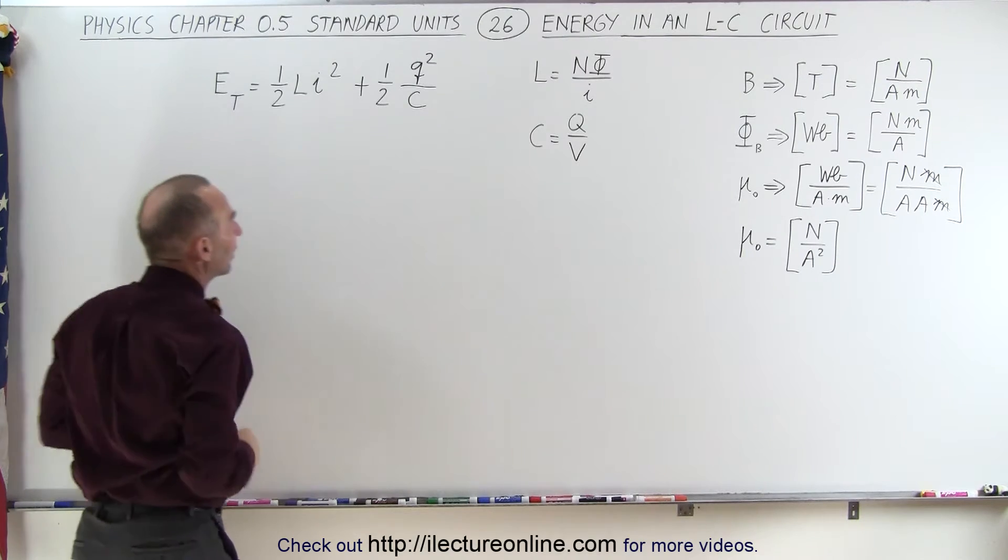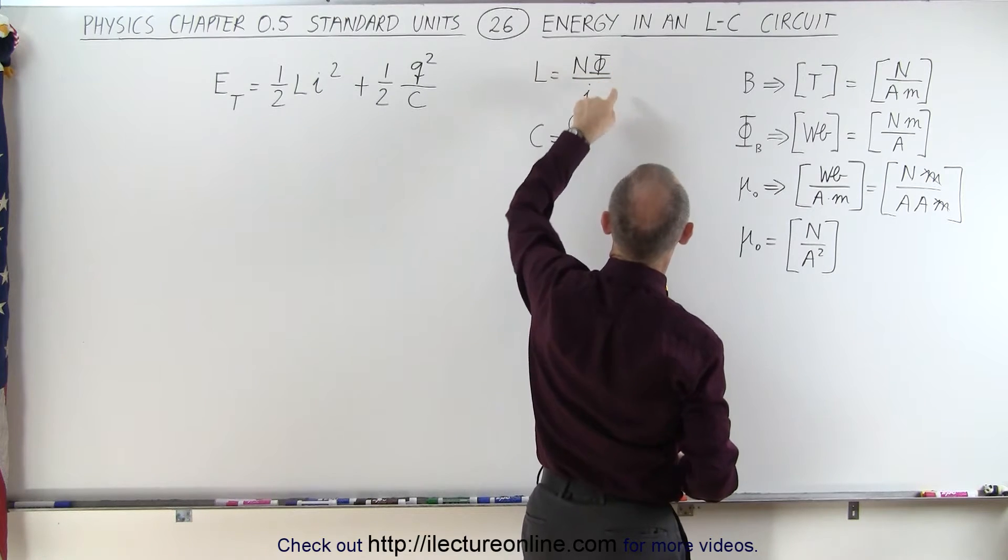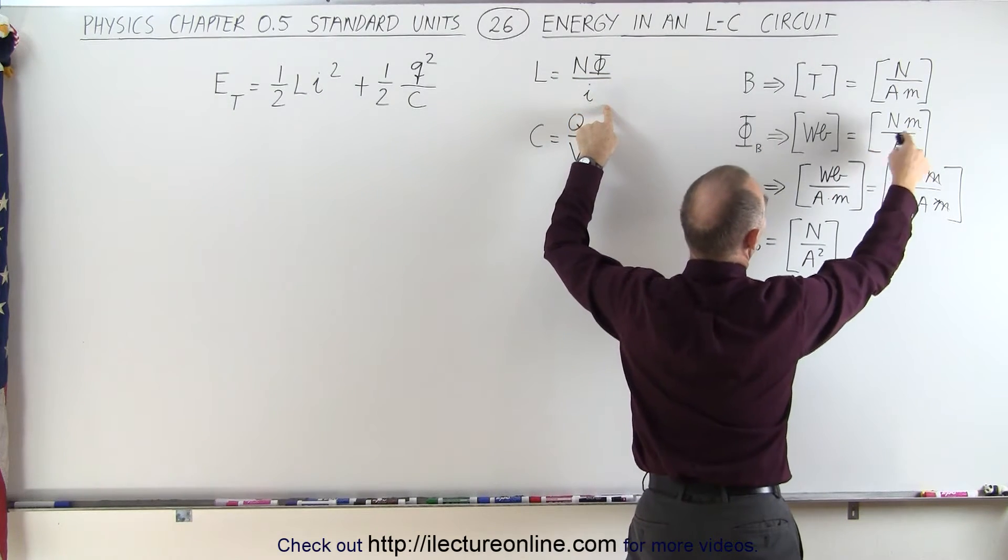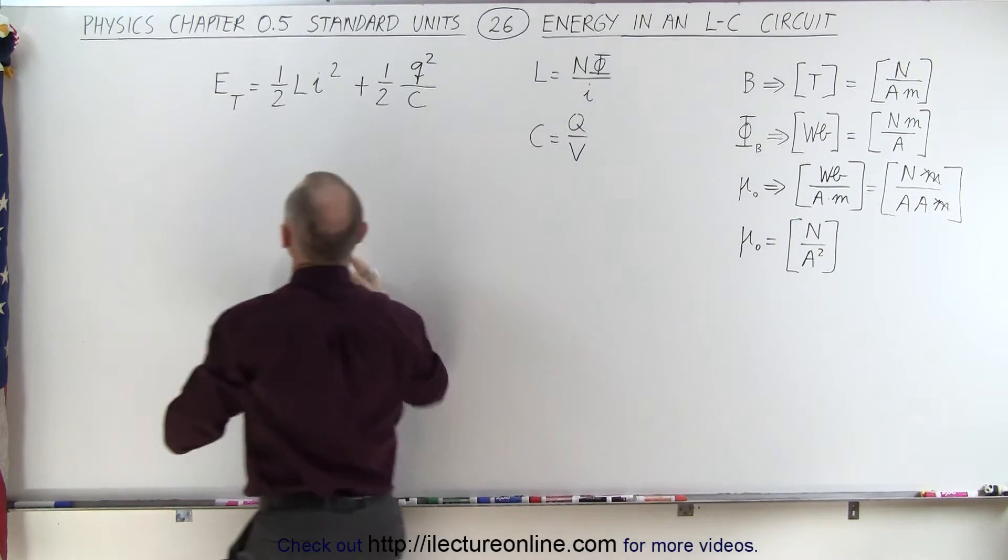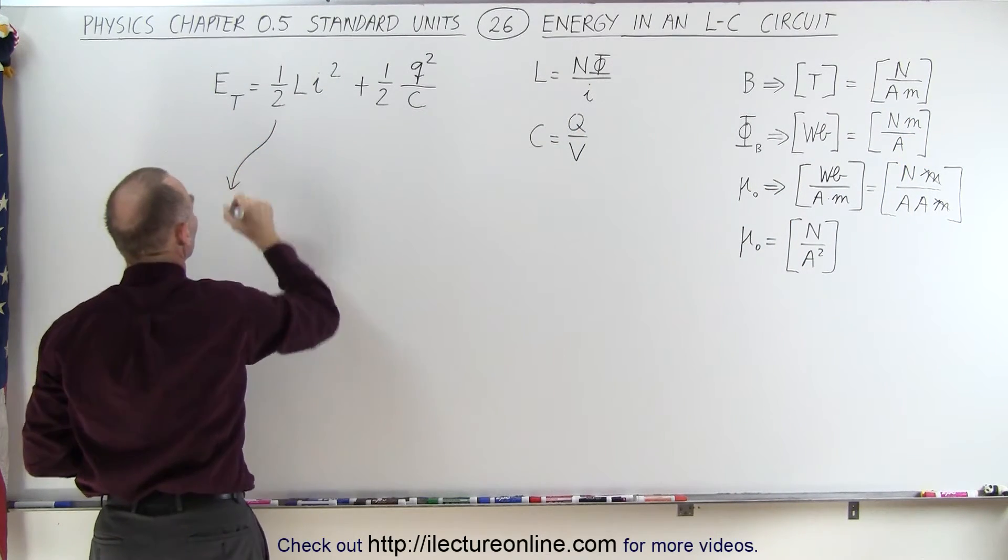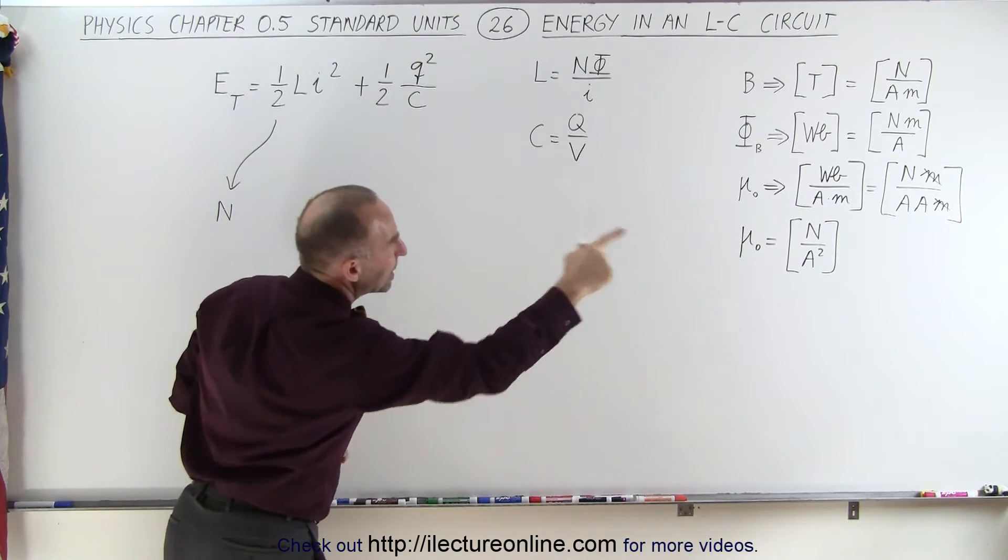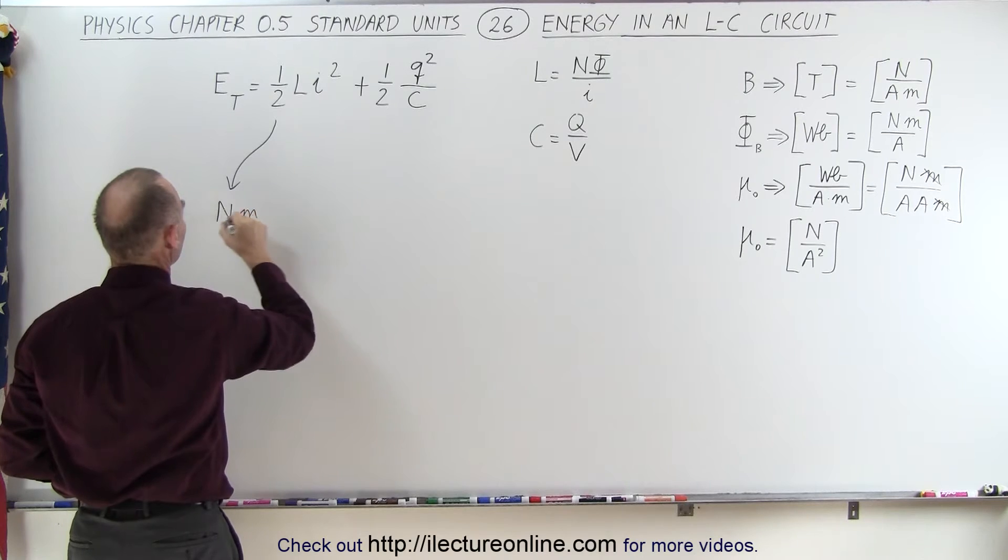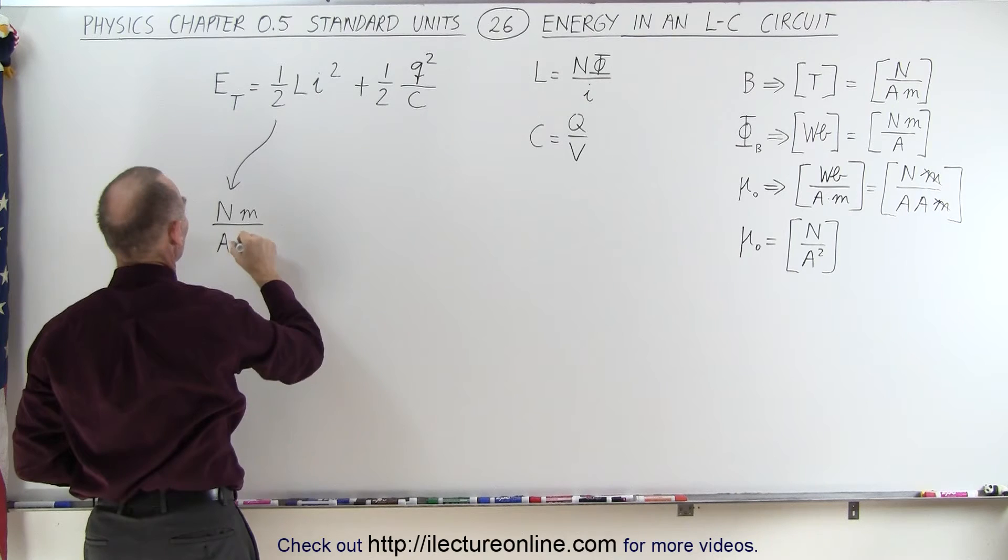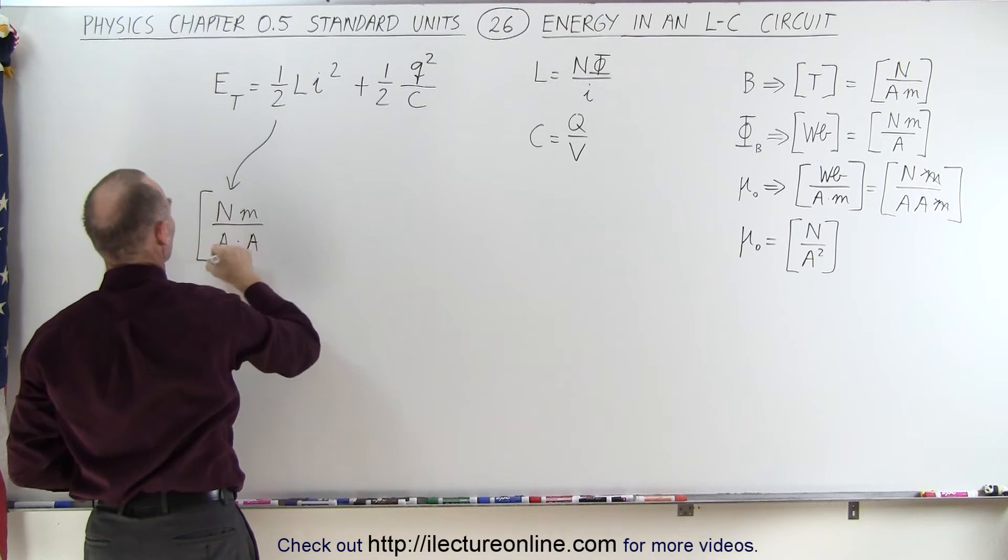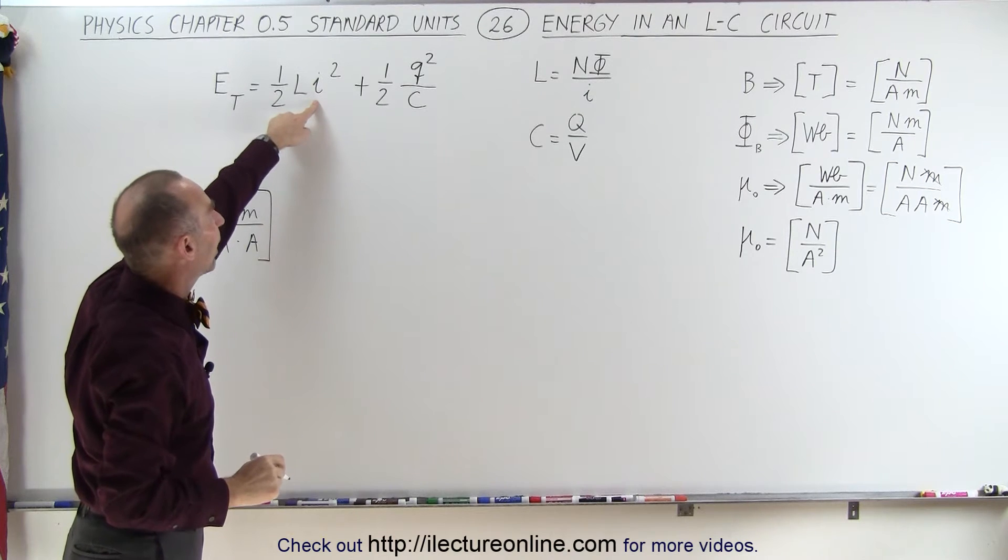So we have the units for self-inductance with number of turns times the flux divided by the current. The units for flux is Weber's, which is Newton meters divided by amps. So when we talk about the units for self-inductance, we're going to have Newtons, meters divided by amps. And then we have to divide that by the current. The units for that is also amps. So now we have Newton meters per amp squared for self-inductance.